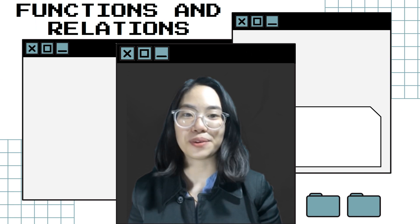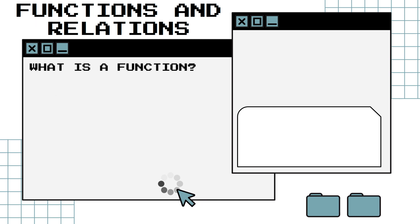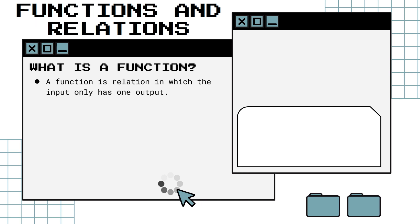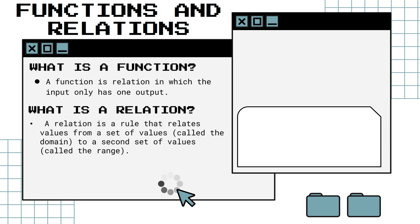Now let us tackle what is a function and what is a relation. A function is a relation in which the input only has one output. On the other hand, a relation is a rule that relates values from a set of values called the domain to a second set of values called the range.